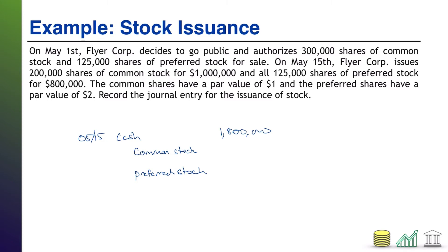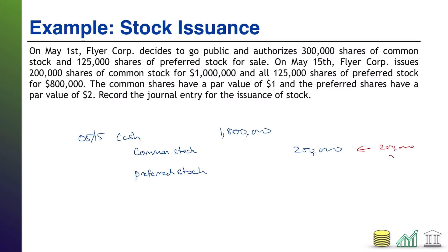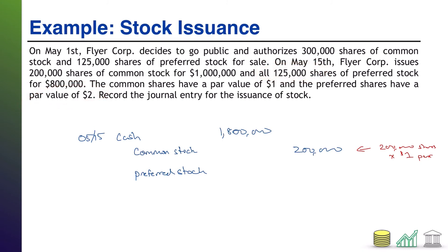For common stock: 200,000 shares at a par value of one dollar gives us 200,000 dollars in the common stock account (200,000 shares × $1 par). For preferred stock: 125,000 shares at a par value of two dollars gives us 250,000 dollars in the preferred stock account (125,000 shares × $2 par).